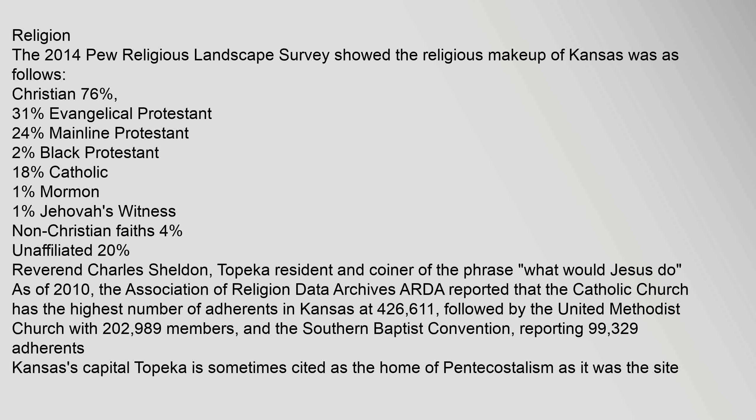The 2014 Pew Religious Landscape Survey showed the religious makeup of Kansas was: Christian 76% — comprising 31% Evangelical Protestant, 24% Mainline Protestant, 2% Black Protestant, 18% Catholic, 1% Mormon, 1% Jehovah's Witness — non-Christian faiths 4%, and unaffiliated 20%. As of 2010, the Association of Religion Data Archives reported that the Catholic Church has the highest number of adherents in Kansas at 426,611, followed by the United Methodist Church with 202,989 members, and the Southern Baptist Convention reporting 99,329 adherents.